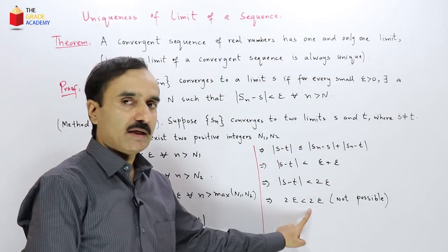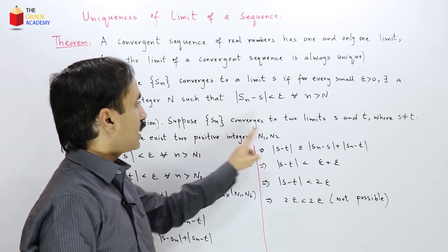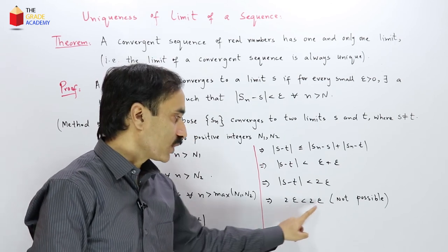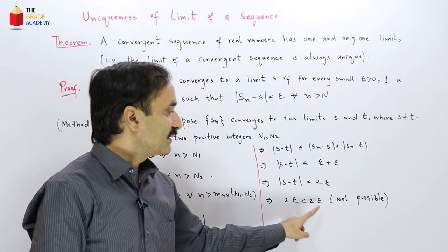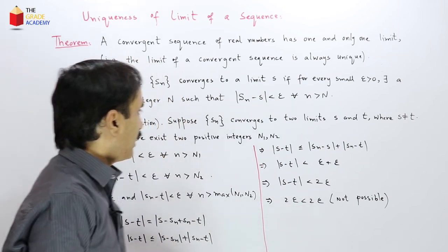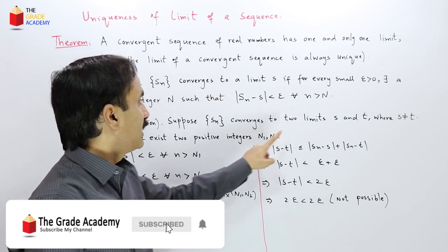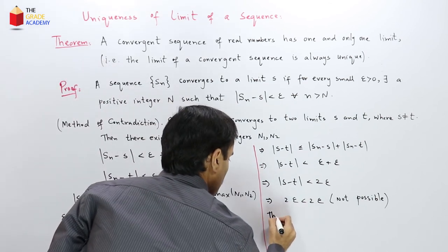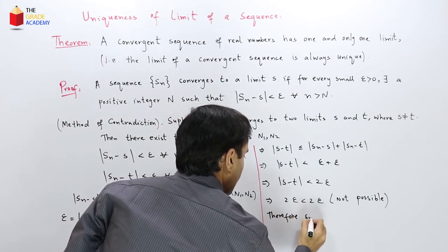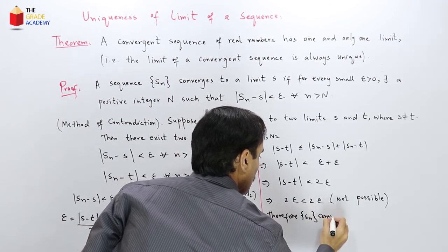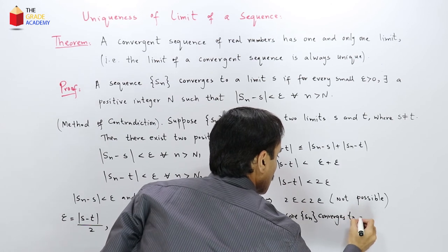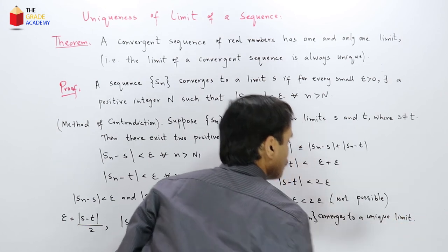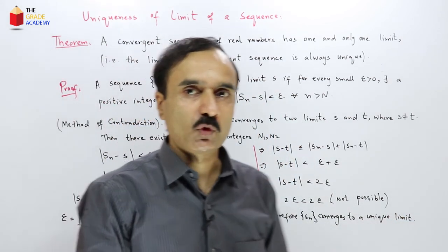This contradiction shows that our supposition — that S_n converges to two different limits — leads to an impossible statement. Hence our supposition is wrong, and the sequence converges to only one limit. Therefore, S_n converges to a unique limit.